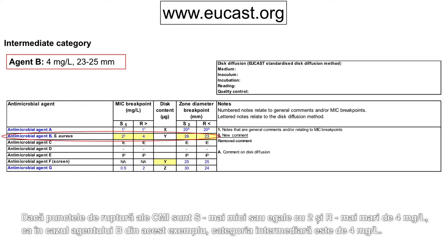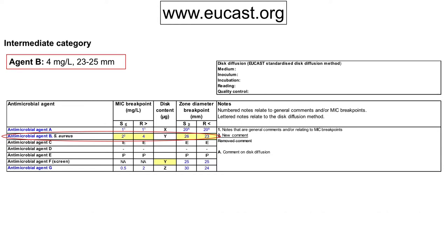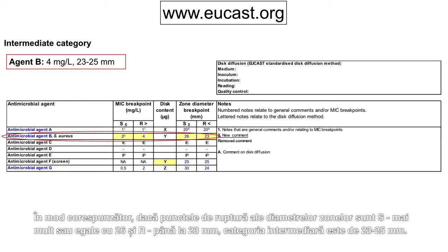If the MIC breakpoints are S less than or equal to 2 and R greater than 4 mg per litre, as for agent B in this example, the intermediate category is 4 mg per litre. Correspondingly, if the zone diameter breakpoints are S more than or equal to 26 and R less than 23 mm, the intermediate category is 23 to 25 mm.